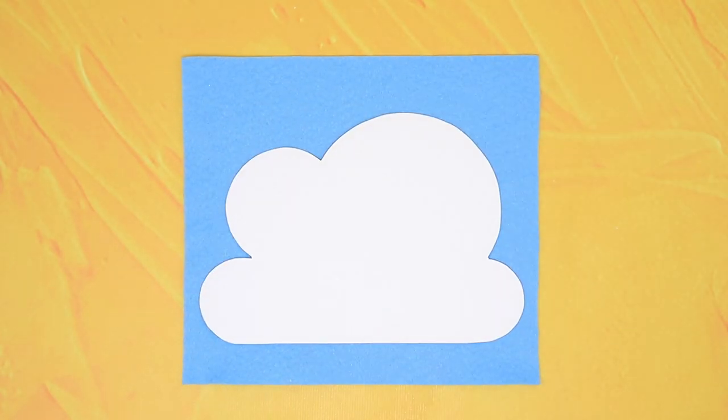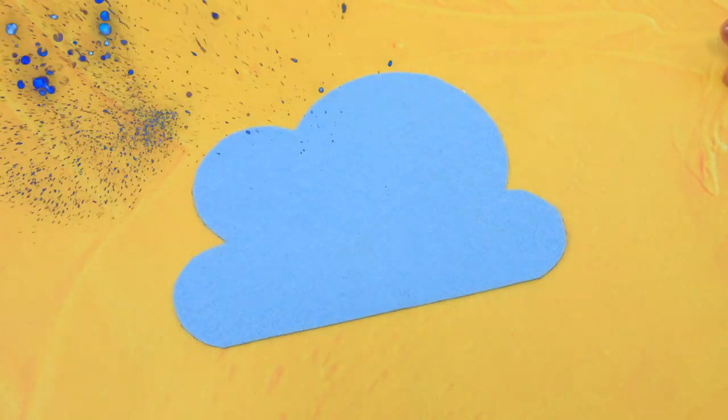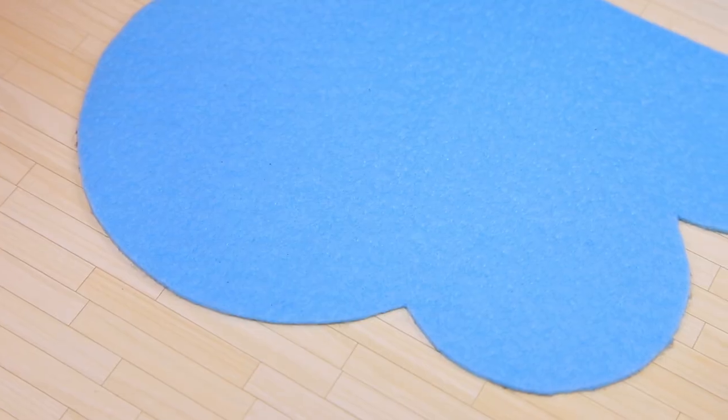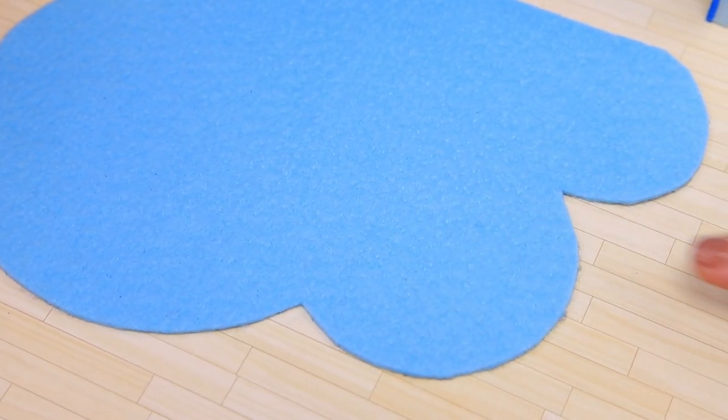Outline a template of a cloud on blue felt. Make a soft mat shaped as a small cloud. We have one more wall left.